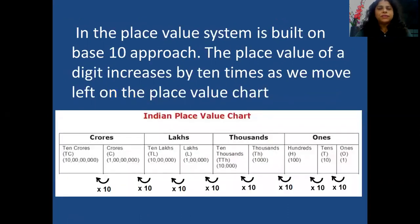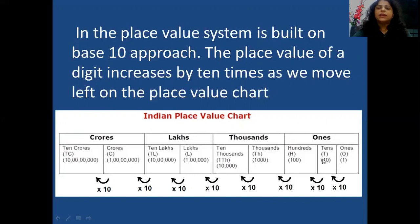Now coming to the place value system. The Indian place value system is based on a base 10 approach. The place value of a number increases by 10 times as we move from right to left on the place value chart. For example, from 1s to 10s: 1, 10, 100, 1000, 10,000, lakh, 10 lakh, crore, and 10 crore. So it's multiplying by 10 every time we shift from one place to the next.